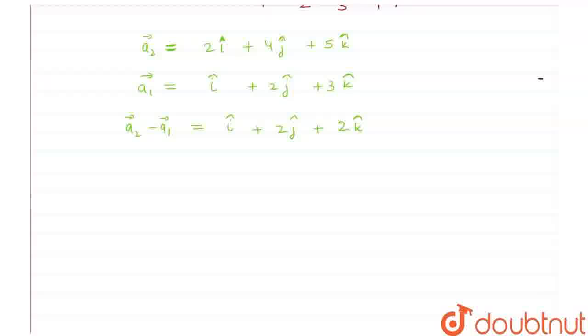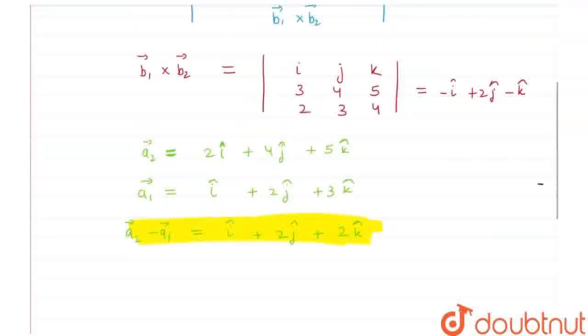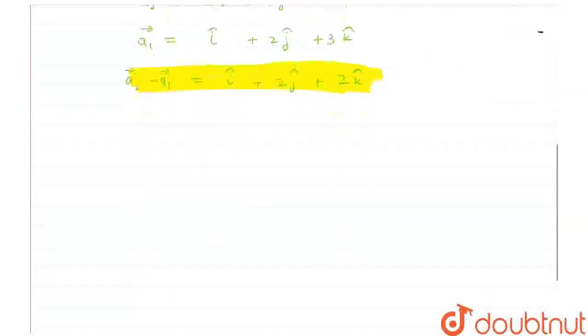We have found here a2 minus a1 vector and b1 cross b2 which is here. Now let's put that in our formula.